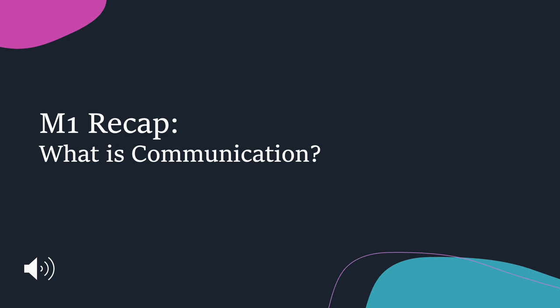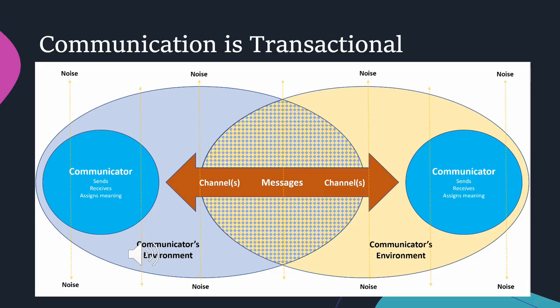We briefly discussed most of these topics in our first workshop, so I'm just going to briefly go over the information in Module 1, starting with the question: what is communication? In Module 1, you learned about the transactional model of communication using a diagram, which has two communicators communicating through various channels, from within their own environments, coming together in the center to create shared meaning, and communicating through, in despite of, but also because of various noise factors that play a part in shaping communication.